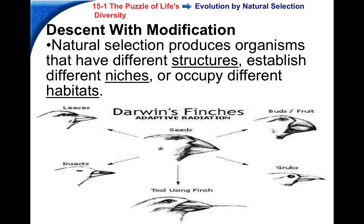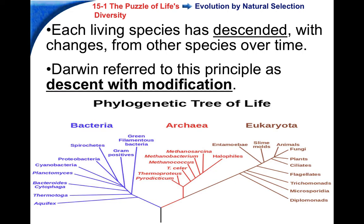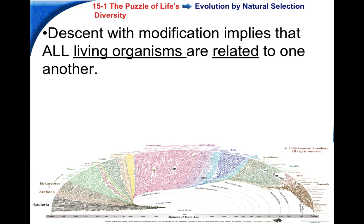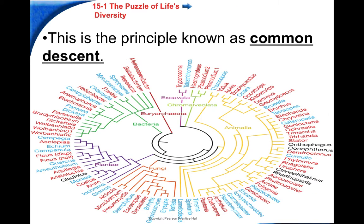Natural selection produces organisms with different structures that can establish different niches, different food sources, or occupy different habitats. This is how the finches on the Galapagos Islands slowly diverged to become different species. Every species has descended with change from other species over time — the tree of life idea. Every living organism on earth is related to every other organism. Darwin called this descent with modification, implying all living organisms share one common ancestor — something similar to a common bacterium, over three and a half billion years ago.